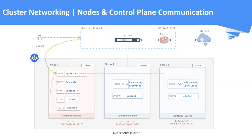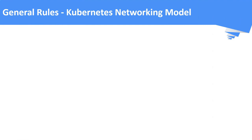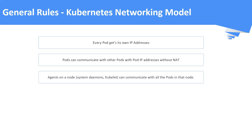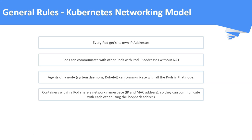Remember, Kubernetes does not provide a native solution for Kubernetes networking. The general rules laid down by Kubernetes for pods and service networking are: every pod should have its own IP address; pods on a node should be able to reach all other pods on all other nodes without NAT; node agents like system daemons and kubelet should communicate with all the pods on that node; and containers within a pod share a single network namespace so they can communicate with each other using loopback IP addresses. Keeping all these rules in mind, let us see the next slides.